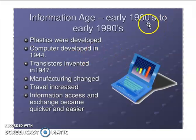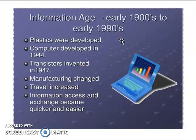The next age is the information age, which started in the 1990s. Plastic was developed here, the computer was developed, and the transistor was invented — used to power electricity in many devices. People started to travel using aeroplanes and began migrating to other places. Information access and exchange became easier because of the telephone, the internet, and mobile devices. It became easy to communicate in this age compared to earlier ages.